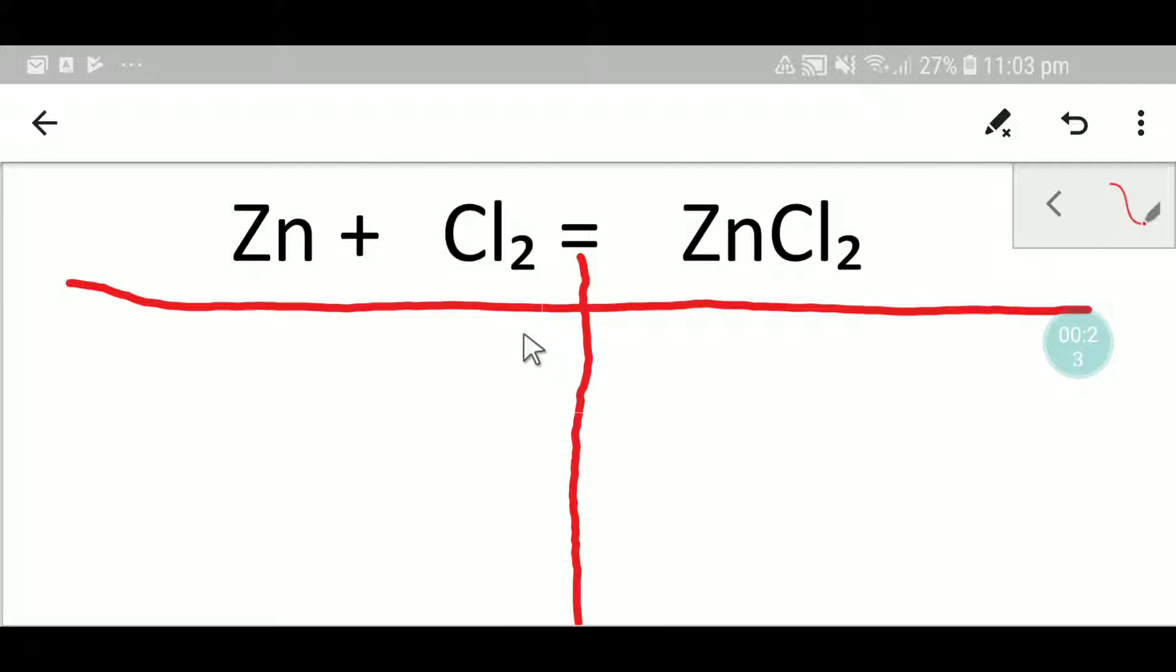If we draw a table like this, then we're getting two parts. This is the reactant part and this will be for the products part. On the left hand side we have one zinc and here we have two chlorine.